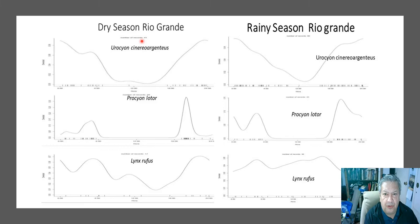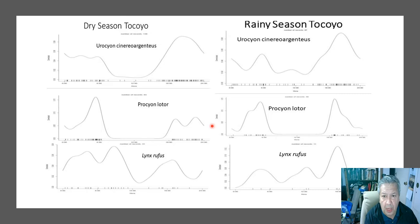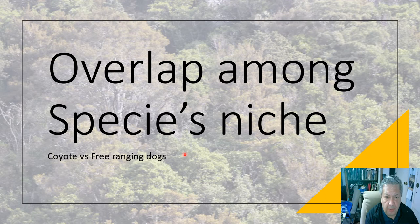Between the dry and rainy seasons, the differences among the species indicate that for some of them, the bimodal activity time changes and tends to vanish during the rainy season. The same happens in the other area we studied, where the bimodal pattern was observed during the dry season but tends to vanish during the rainy season. This indicated that the probable activity pattern is more related to the environment than to competition among these species.